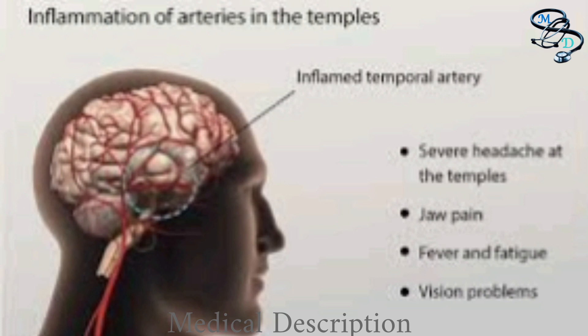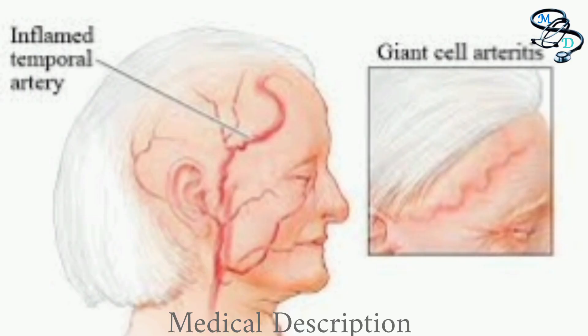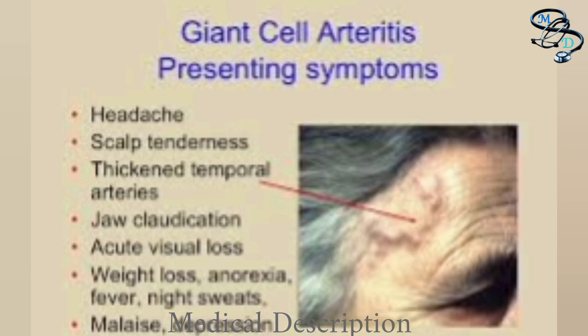Although there is no cure for temporal arthritis, the condition can be treated with medication. Temporal arthritis should be treated as soon as possible to prevent further damage caused by poor blood flow. Patients over the age of 50 with symptoms such as new onset headache, sudden and brief loss of vision, or jaw pain with or after chewing should contact a doctor immediately.